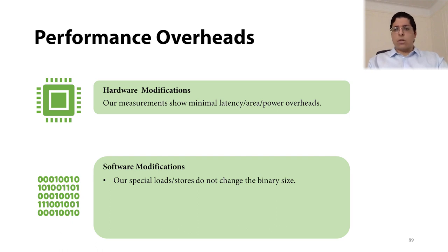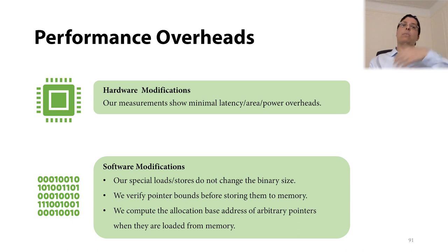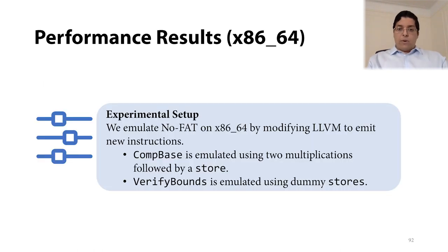In terms of the software modifications cost, our special loads and stores do not change the binary size as they simply replace traditional memory access instructions. However, we still need to verify the pointer bounds before storing them to memory and compute the allocation base address of arbitrary pointers whenever they are loaded from memory. To emulate the performance overheads of these extra operations on a real x86-64 machine, we wrote an LLVM compiler pass to emit dummy instructions to replace compute-base and verify bounds. We used two multiplications, followed by a store, to emulate the steps of compute-base, which we explained earlier. We also emulate verify bounds with dummy store instructions. The reason why we use dummy store instructions is simply to prevent the compiler optimizations from removing them.